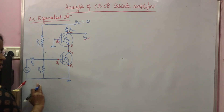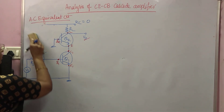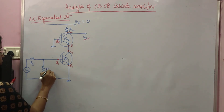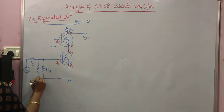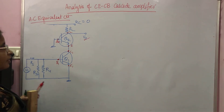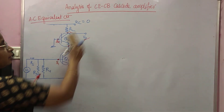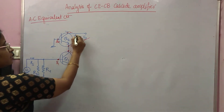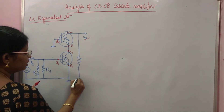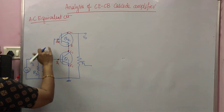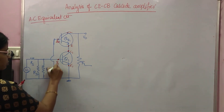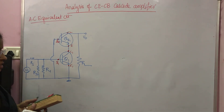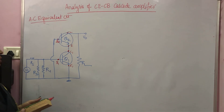So I am keeping R3 and R4 in the circuit, and RL is placed to ground. This completes the AC equivalent circuit of the CE-CB cascode amplifier.